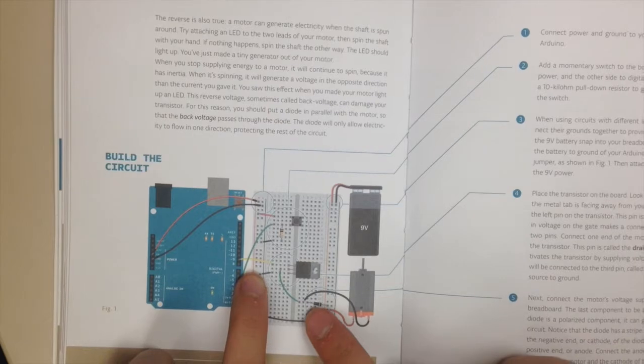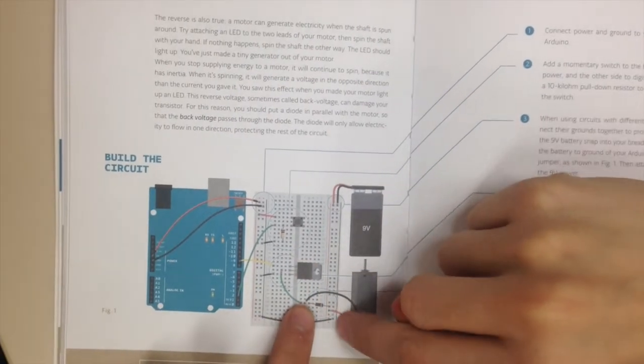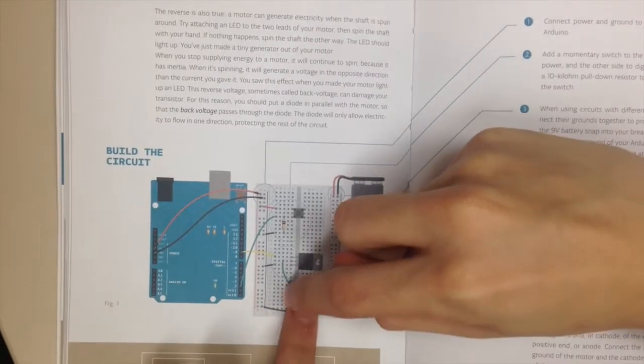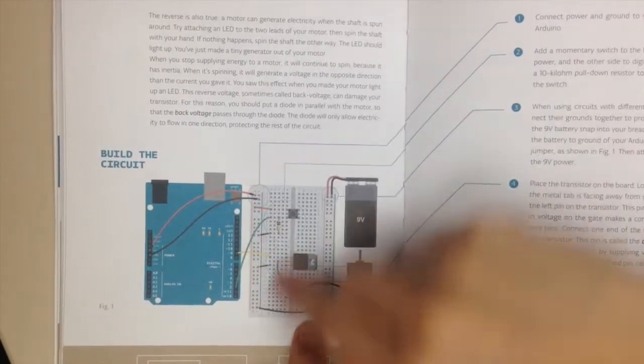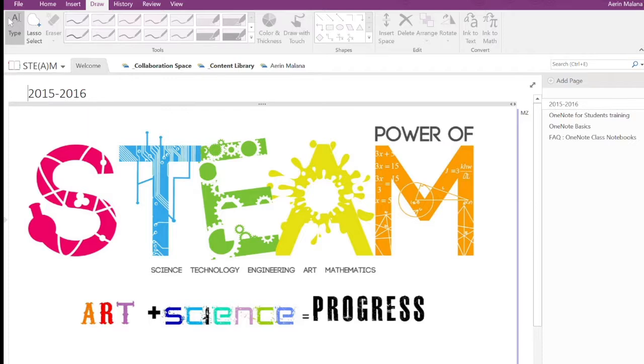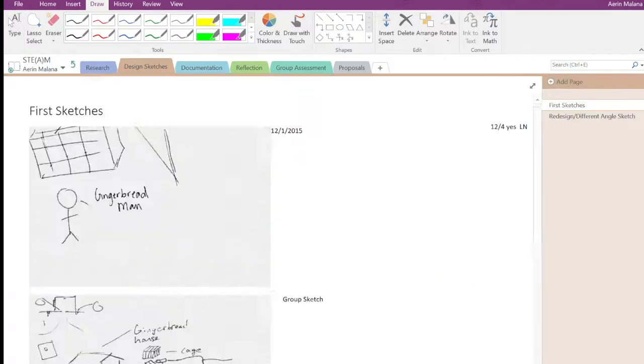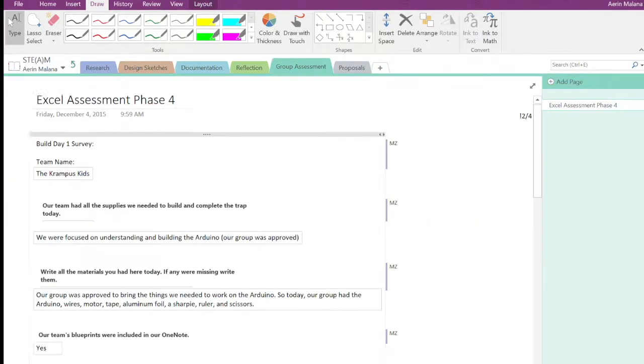Before the wire reaches the motor, it goes through a diode. A diode makes sure that electricity can only flow in one direction. This ensures that possible energy produced by the motor cannot flow back into our circuit to damage it. All of our research, sketches, proposals, and self-assessments were put into our STEAM notebook.